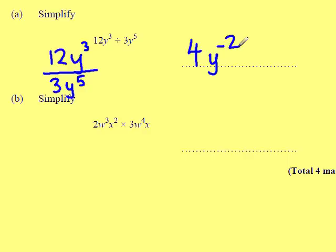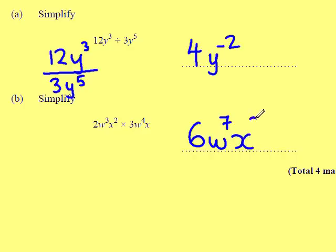Part B. Simplify. We multiply the numbers then each of the letters, not forgetting to add the indices because we're multiplying. 2 times 3 is 6. W to the power of 3 times W to the power of 4 is W to the power of 7. And X squared times X will be X cubed.